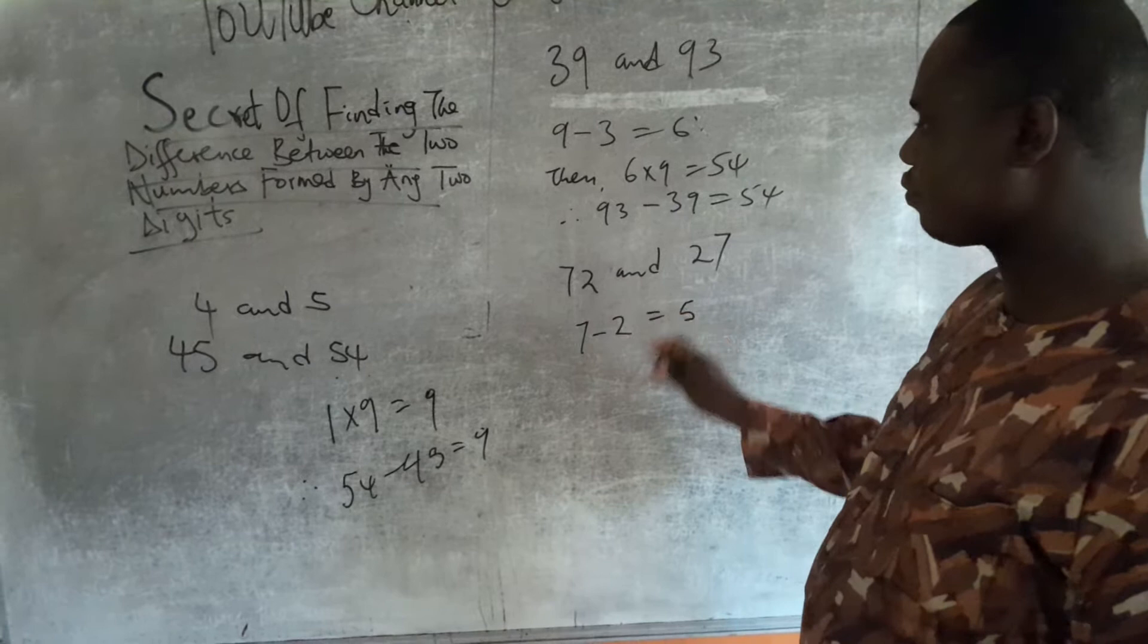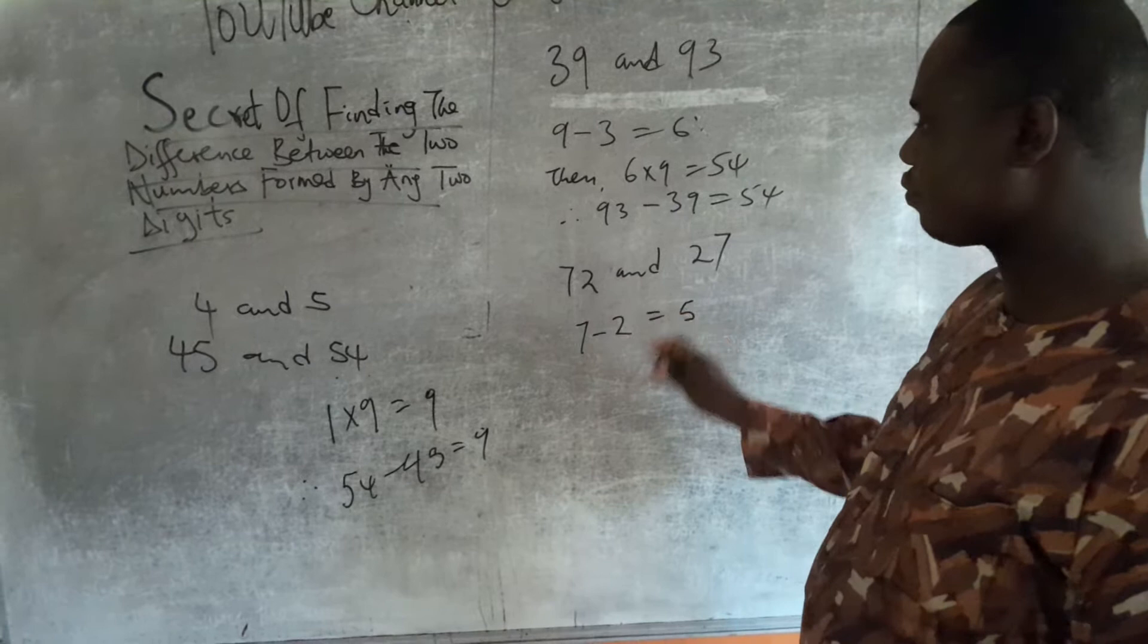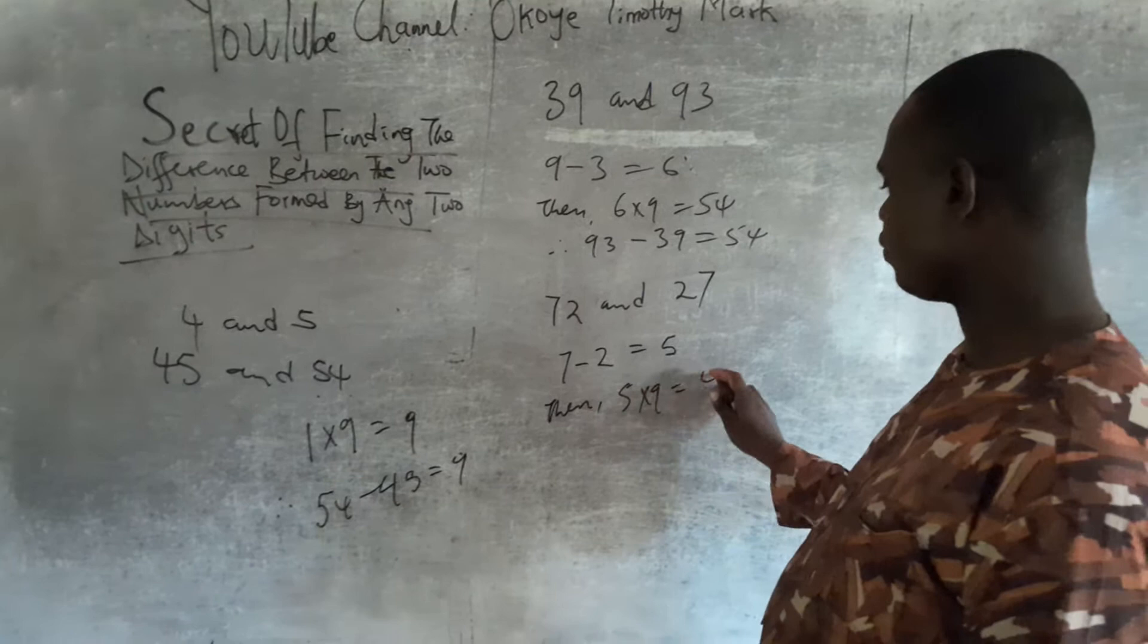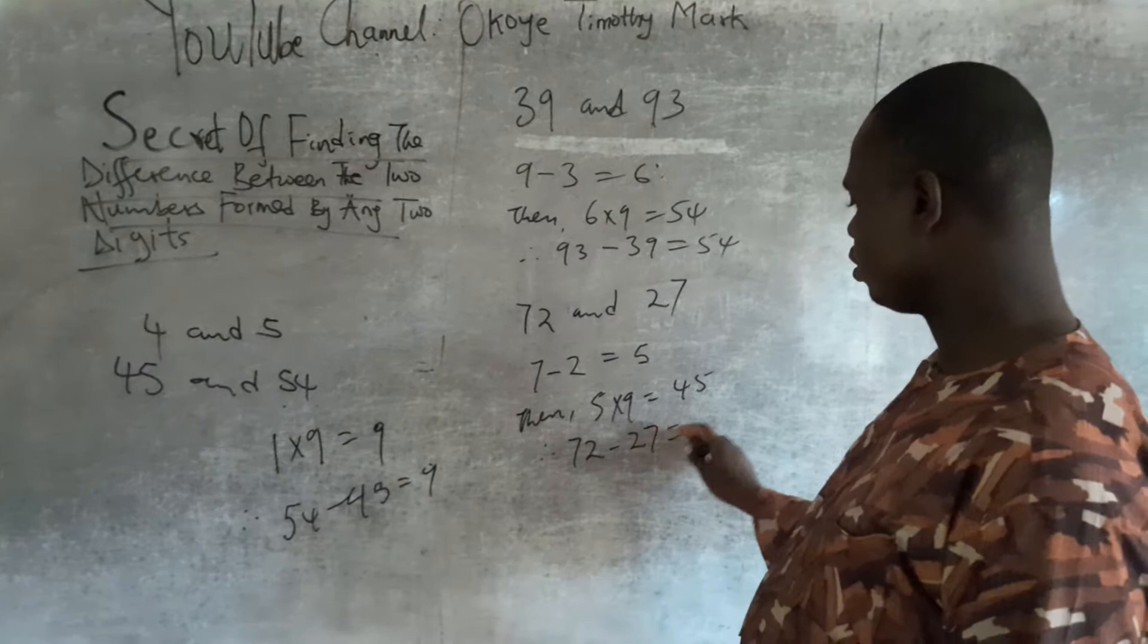Then I will do 5 times 9, that equals 45. Therefore, 72 minus 27 is 45.